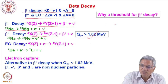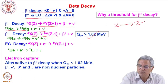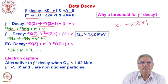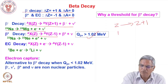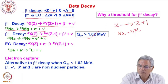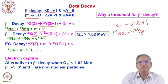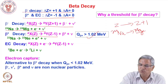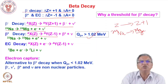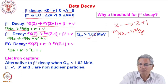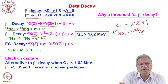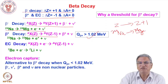When the atomic number increases from Z to Z+1 by beta minus decay, there is one extra electron. For example, sodium going to magnesium: when it becomes magnesium, there is one electron more needed, but the atom will simply pick up an electron from the surroundings. So when sodium converts to magnesium, it becomes positively charged and can easily pick up an electron. Sodium-24 emits an electron and magnesium picks one up — in terms of electrons, there is no net loss or gain.